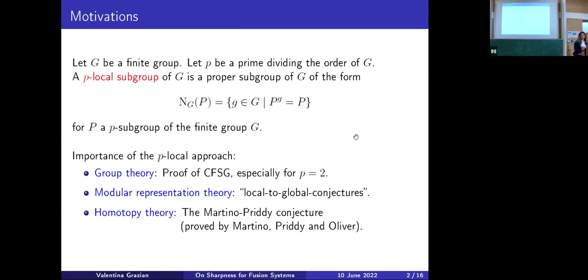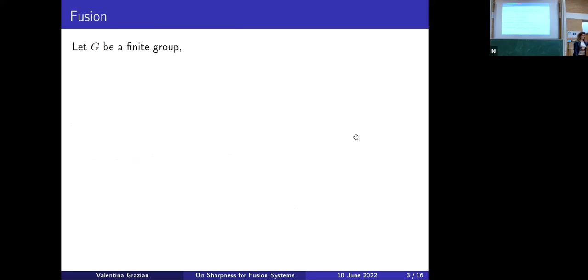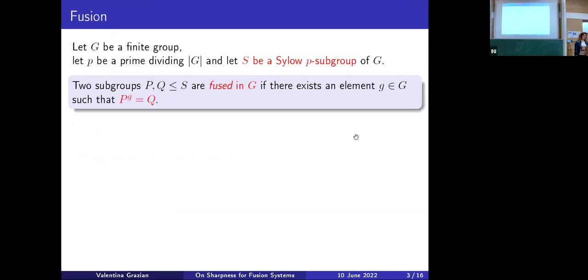So I hope I convinced you that it's interesting to study the p-local structure of a finite group. And the modern way to do that is via the theory of fusion systems. So, G is a finite group, P is a prime dividing the order of G, S is a Sylow P-subgroup of G. And we say that two subgroups P and Q of S are fused in G if they are conjugated by an element of G.